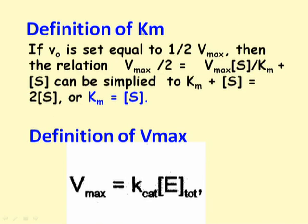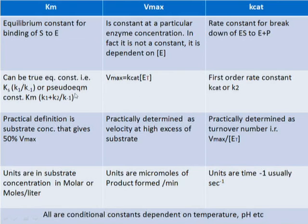The practical definition of Km is the substrate concentration at which velocity is 50% of Vmax. Vmax on the other hand equals Kcat times Et. Kcat is the same as k2, the forward rate constant for the breakdown of ES to E plus P. This table gives a clearer idea about the constants in the Michaelis-Menten equation.